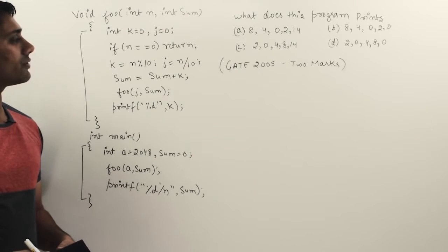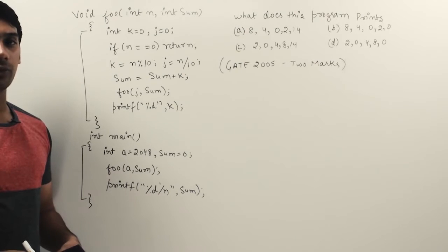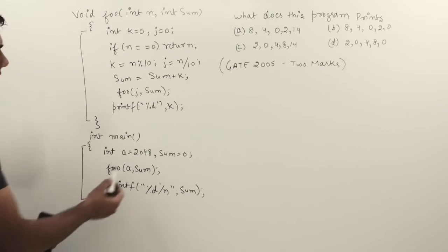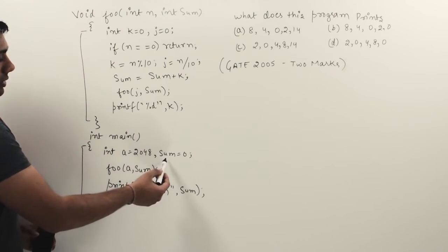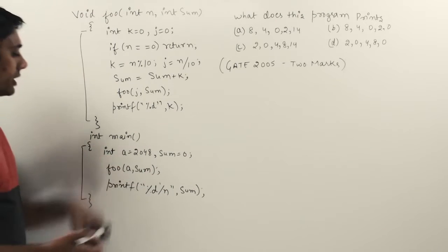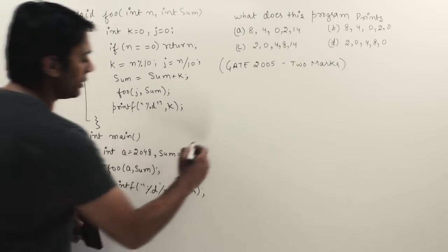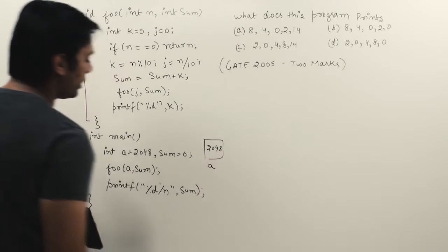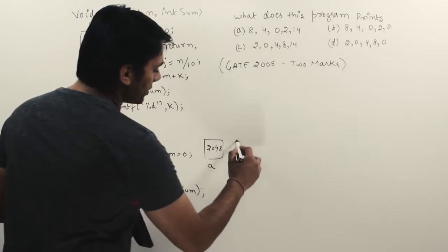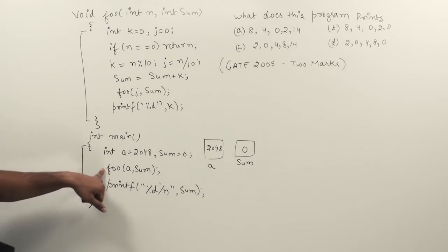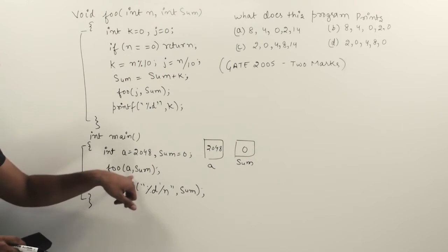This question was asked in GATE 2005 and it was a two-mark question based on recursive programming. In main, variable a is equal to 2048 and sum is equal to zero. Then we call the function foo and pass the value of a and sum.